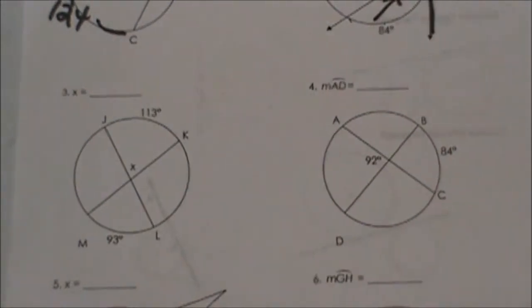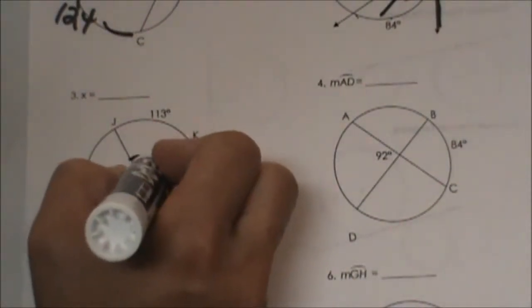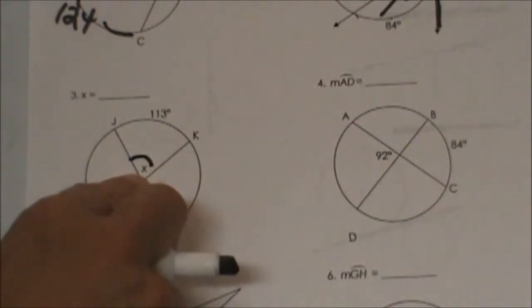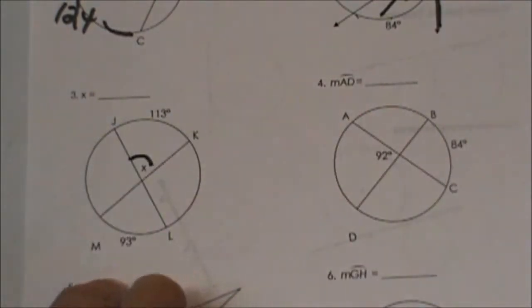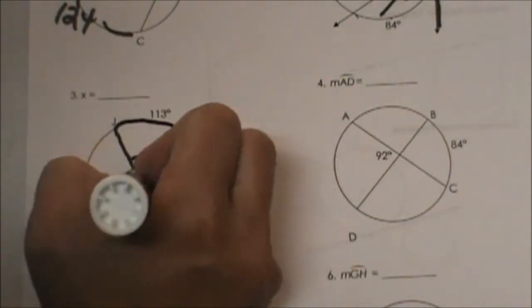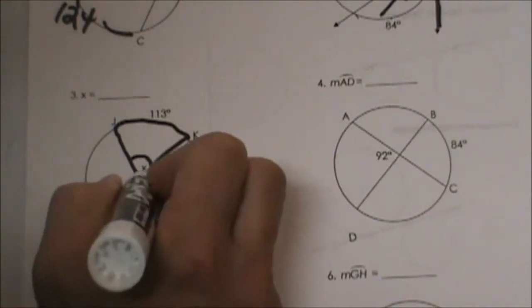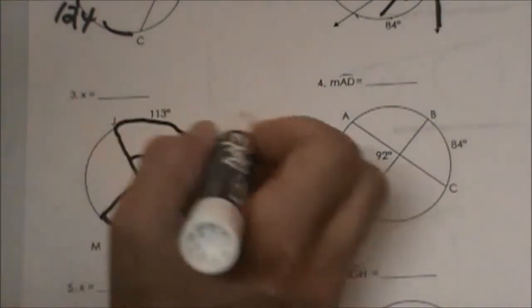Now let's look at some of the new ones. We are looking for this angle right here. It is not at the center of the circle. If it was we would have a 113 degree angle and we would be done. But it is not. So we have to use the bowtie rule. So let's draw and see which arcs we are using. We are using the 93 and the 113.